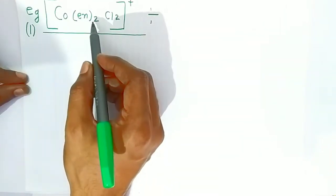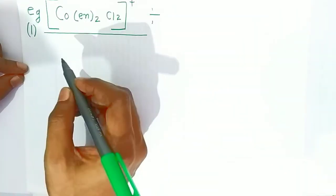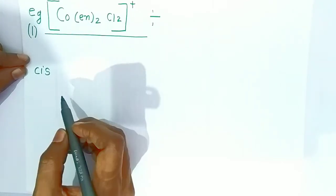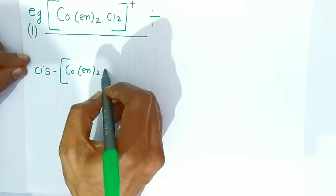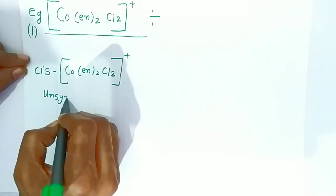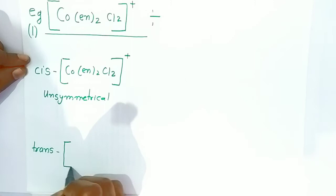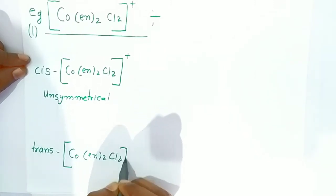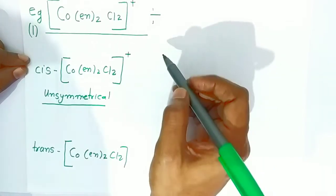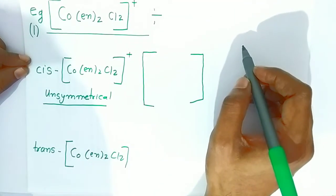For example, we will find the optical isomers of [Co(en)₂Cl₂]⁺, diethylenediaminedichlorocobalt(III). The cis form of this complex is unsymmetrical. We write the cis form and the trans form separately. For the cis form, we draw two complexes with a mirror in between since it forms optical isomers. For the trans form, only one complex is drawn since trans does not form any optical isomers.